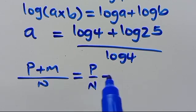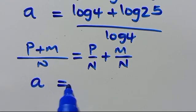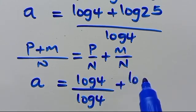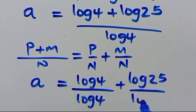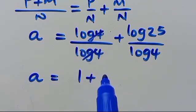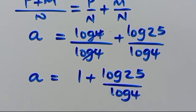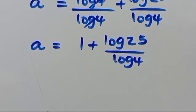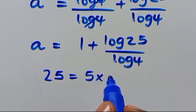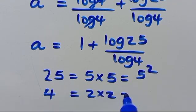Since we have the form (p + n) over n, we can split this as p over n plus n over n, giving us log 4 over log 4 plus log 25 over log 4. Now we recall that 25 equals 5 times 5, which is 5 to the power of 2.